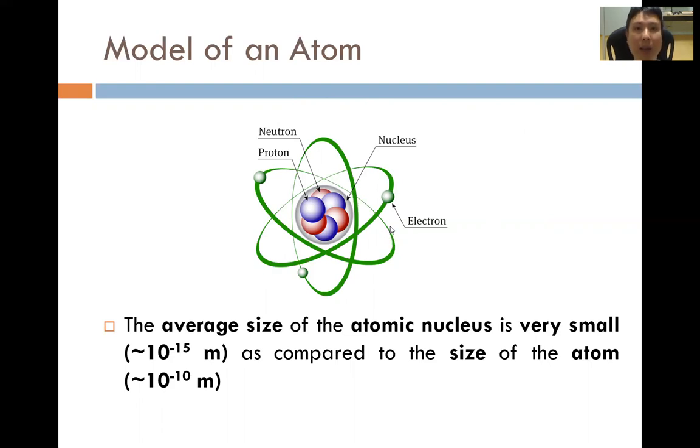We would like to talk about the size of the nucleus as compared to the size of the entire atom. The average size of the atomic nucleus is very small, on the order of about 10 to the power of minus 15 meters. That is the distance between the center of the atom to basically the radius of the entire nucleus. Compared to the size of the atom, the atom is much bigger, 10 to the power of minus 10 meters.